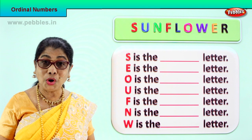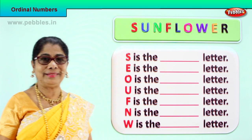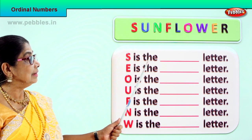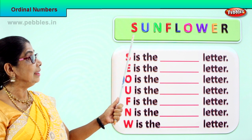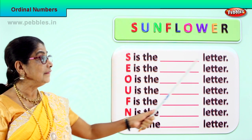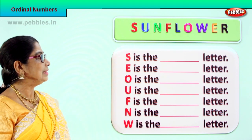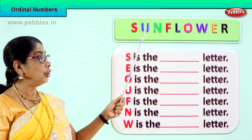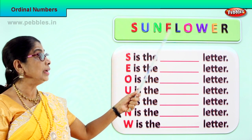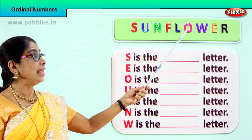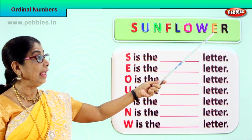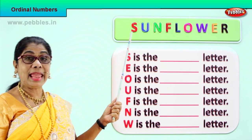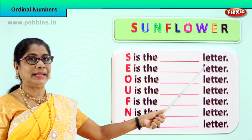Let's see what is the ordinal position. We are learning ordinal numbers. S is the first letter. Let's say all the ordinal numbers first: first, second, third, fourth, fifth, sixth, seventh, eighth, ninth. There are nine letters here.